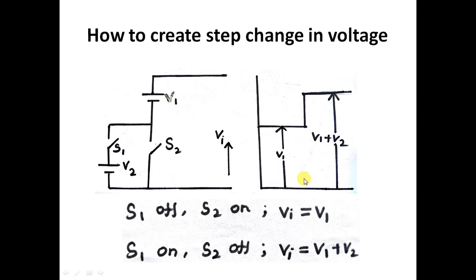At some time, you are opening this switch and closing this switch. When S1 is on and S2 is off, V1 and V2 comes in series. Total voltage is V1 plus V2. This is how we create step change in input voltage.